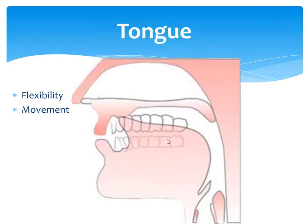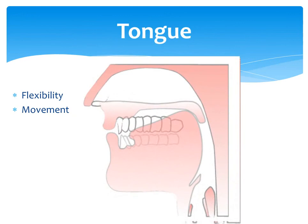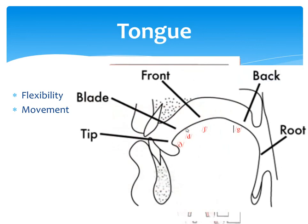We can move the tip of the tongue against the alveolar ridge and produce the sounds /t/ and /d/. We can move the back of the tongue against the soft palate and produce sounds like /g/ and /k/. The movement of each part of the tongue against the palate allows us to produce different sounds.